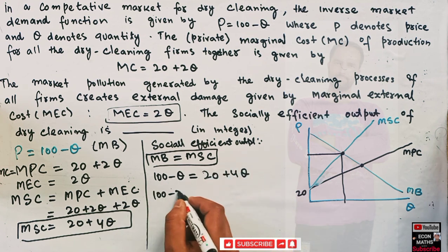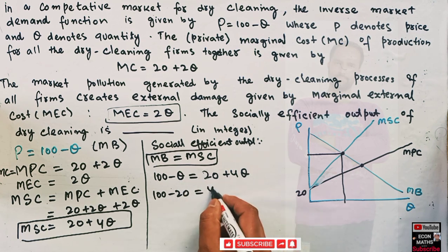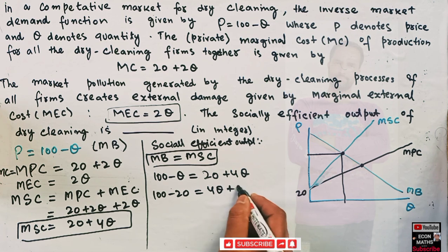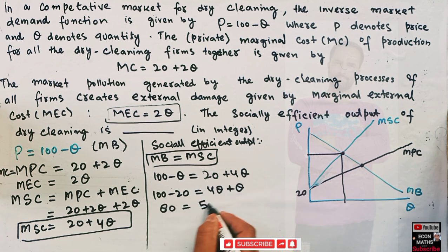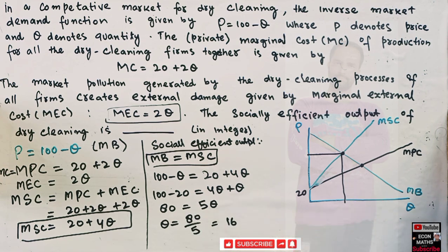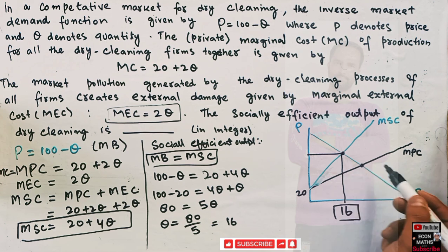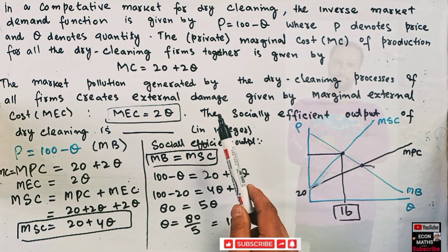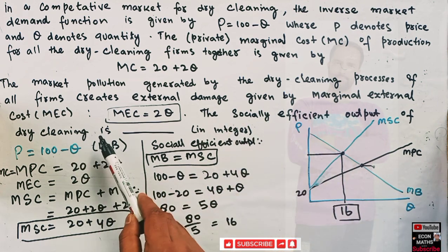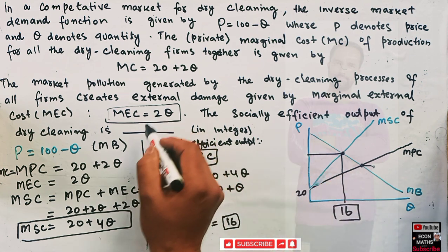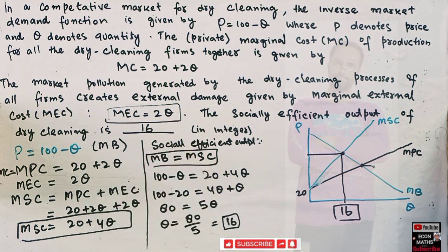Transposing terms: 100 minus 20 equals 4Q plus Q, giving us 80 equals 5Q, which implies Q equals 80 divided by 5, which equals 16. So at the socially efficient output we will be producing 16 units. This point denotes our socially efficient point, while the other point is our market equilibrium or perfectly competitive point. The answer is 16 units of output at the socially efficient level.